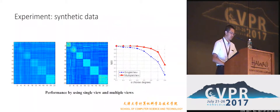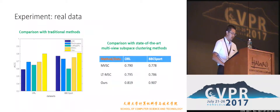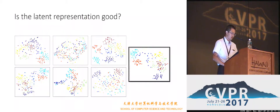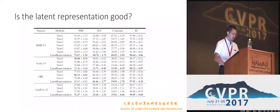Experiment results on synthetic data show that our method with multiple views achieves better results than that of a single view. Experiments on real data validate that our method not only outperforms traditional multi-view clustering methods, but also the state-of-the-art multi-view subspace clustering method. As shown in this figure, the latent multi-view representation can better reveal the cluster structure than each single view, and K-means clustering with the latent multi-view representation achieves better performance.